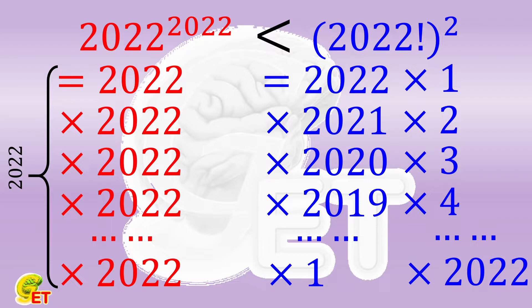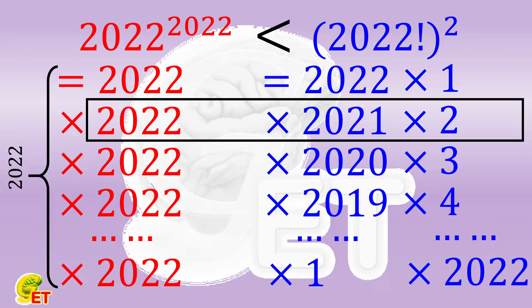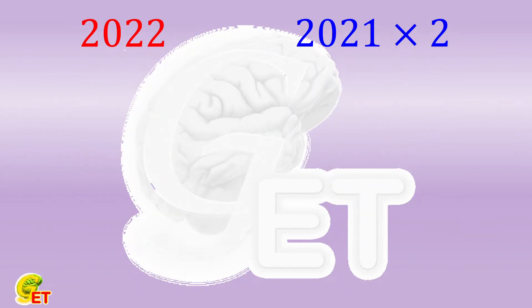Now let's randomly select one pair of the factors and get a little deeper insight into why the left side is always smaller than the right. The comparison between 2022 and 2021 times 2 can actually be seen as a comparison between 2022 times 1 and 2021 times 2.